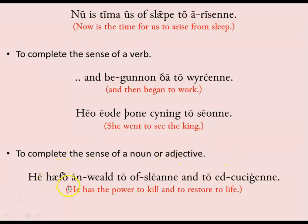The inflected infinitive can also complete the sense of a noun or adjective. For example: 'hē hæfþ anweald tō ofsleanne and tō edcucianne' — he has the power to kill and to restore to life. The noun 'anweald' means authority or power. Without adding the infinitives 'tō ofsleanne and tō edcucianne' we wouldn't know what he had the power for. By adding the inflected infinitive we complete the meaning of the noun.